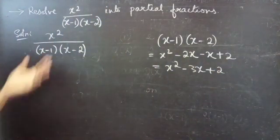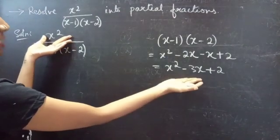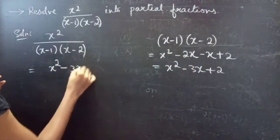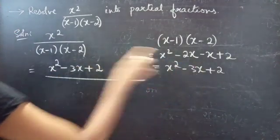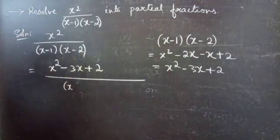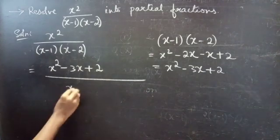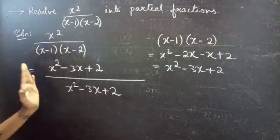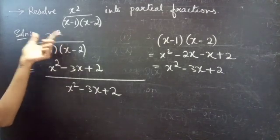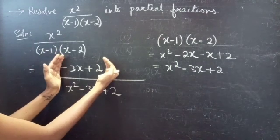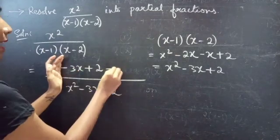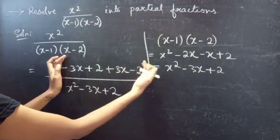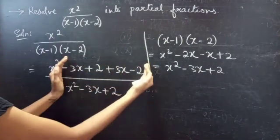What we have to do is write the numerator in terms of x squared minus 3x plus 2. We start by writing x squared minus 3x plus 2. In the numerator we need to get only x squared. But we are having minus 3x plus 2 additionally, so we have to balance it by adding plus 3x and subtracting minus 2. So minus 3x and plus 3x cancel, plus 2 and minus 2 cancel. Finally you get x squared. So we add plus 3x minus 2 to balance.